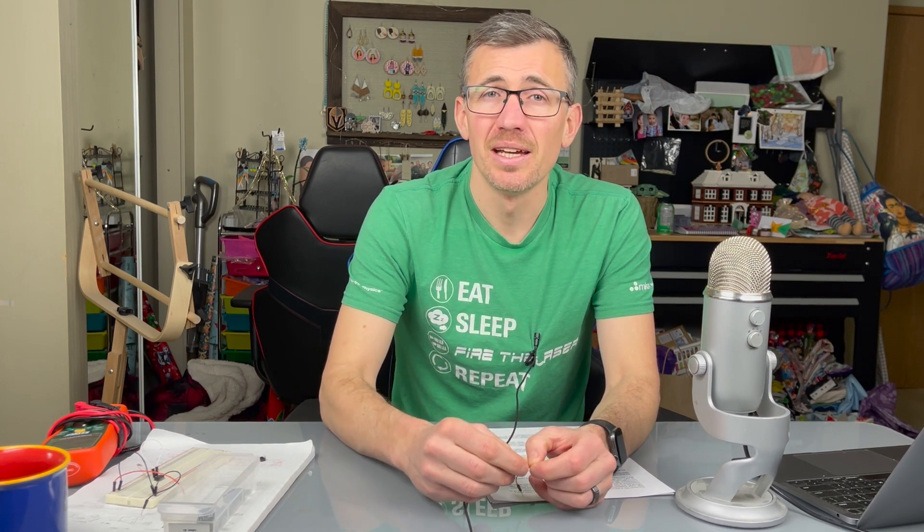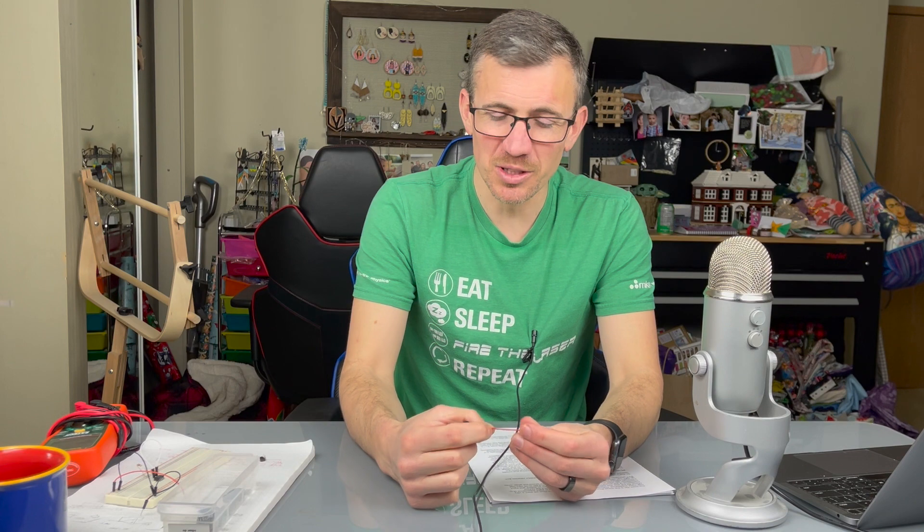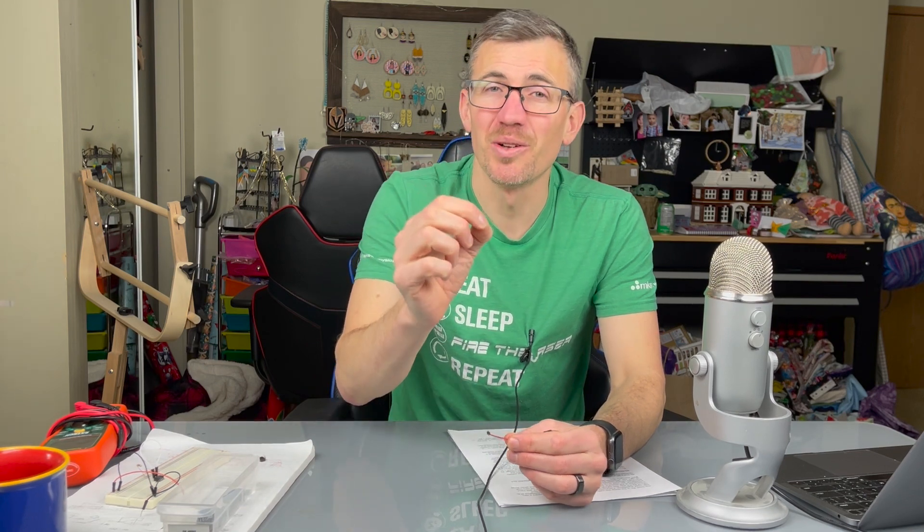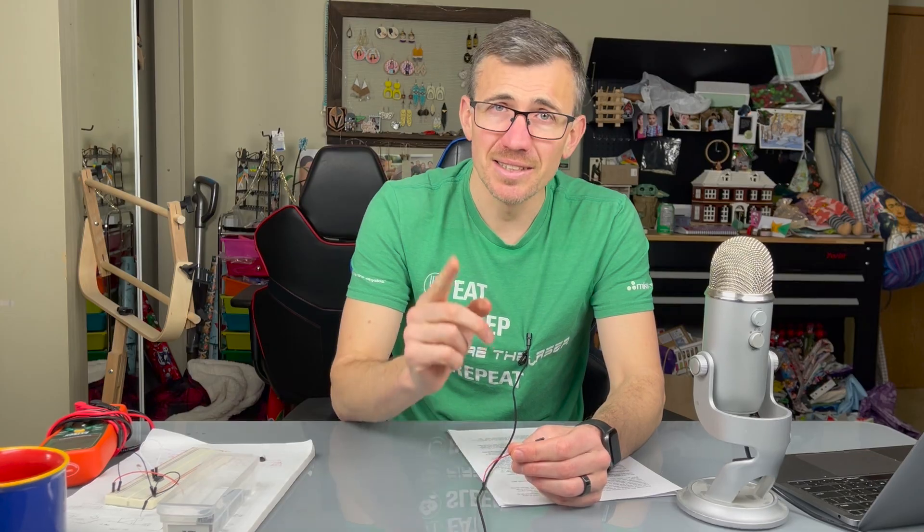Another thing to note is we seem to have made a very useless device. We've gotten a long way to make V out equal V in. And I know an even simpler device that can do that. A wire will do that. So what have we done? Have we made the world's most complicated useless device, the most complicated wire? It turns out no, this circuit is actually incredibly useful. It's very useful to have V out equal to V in in an op amp circuit like this.